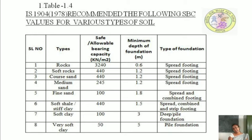For medium sand, the allowable bearing capacity is 805 kN/m² with a minimum depth of 1.2 m, and spread footing can be adopted. For fine sand, the allowable bearing capacity is 100 kN/m² with a minimum depth of 1.8 m, and spread footing or combined footing is recommended. As sand becomes finer, the bearing capacity reduces, the depth of foundation increases, and the type of foundation may vary.